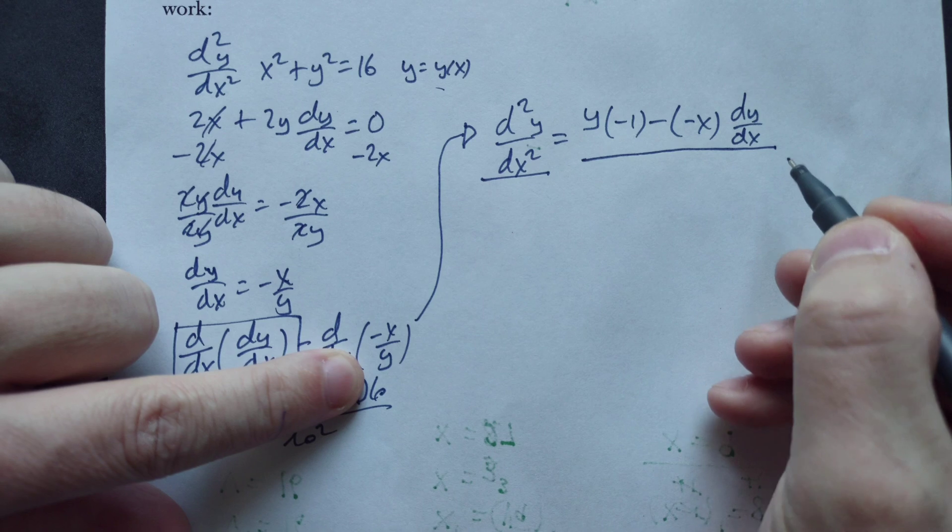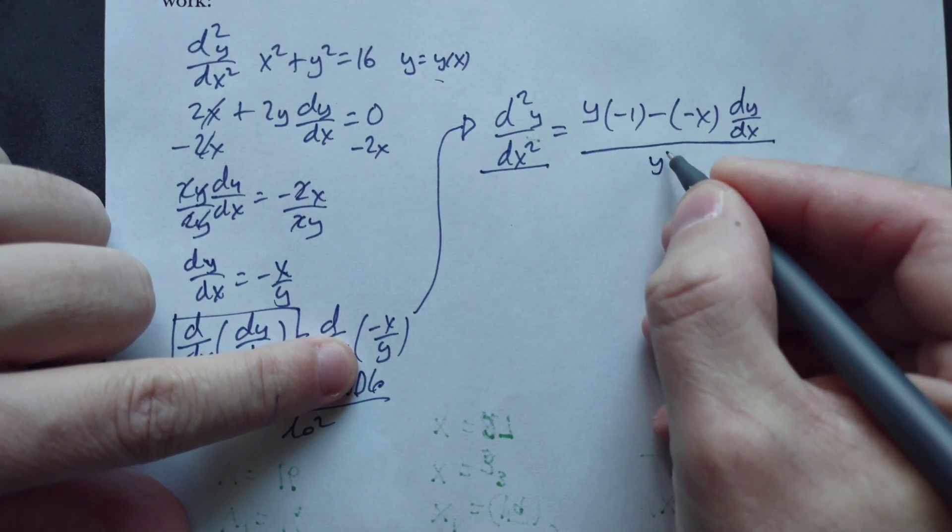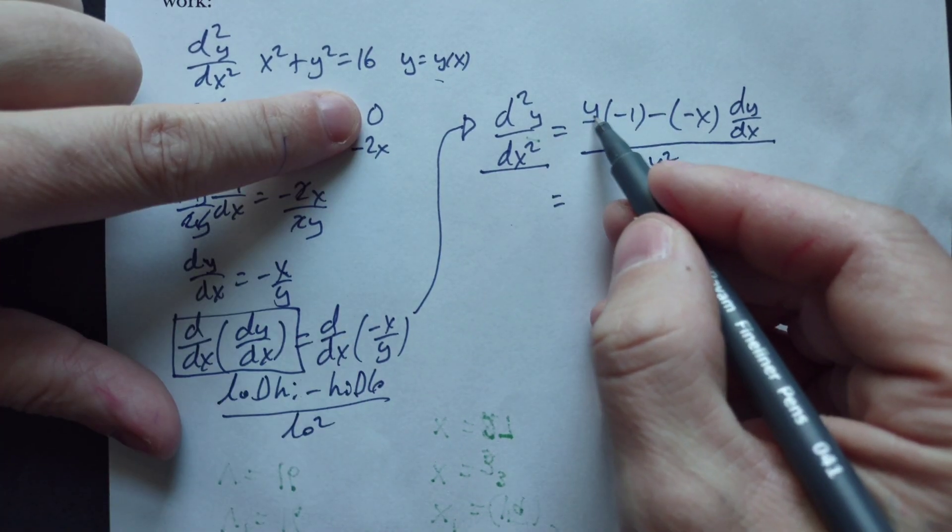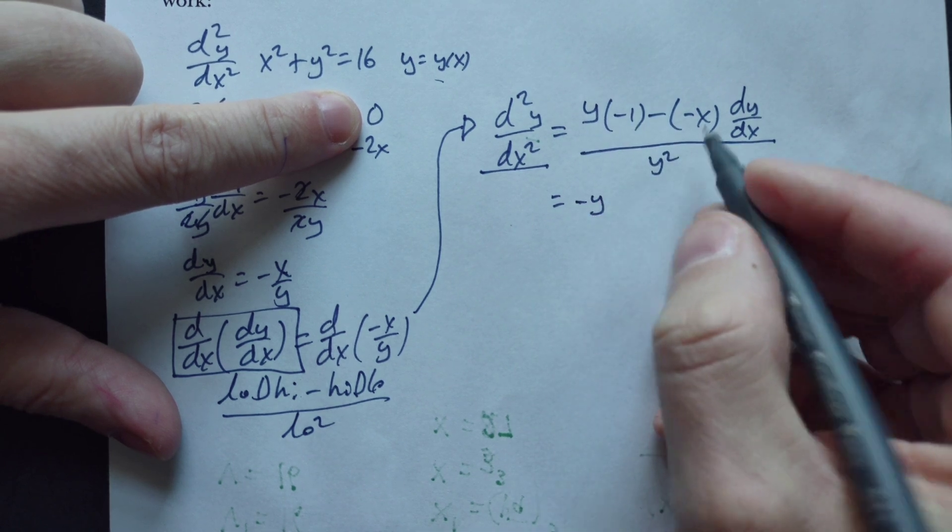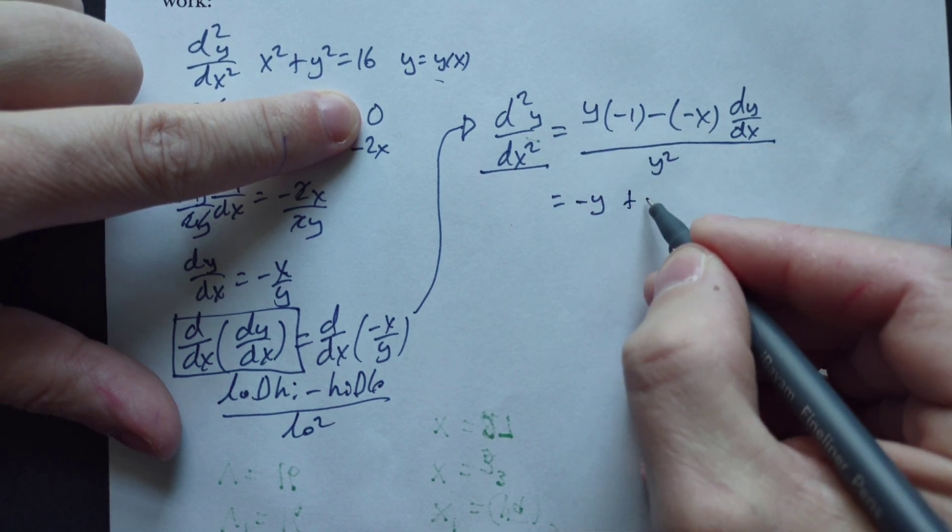Put this over the low one squared, which here would be y squared. This is y times negative 1 is negative y. Two negatives makes it plus x.